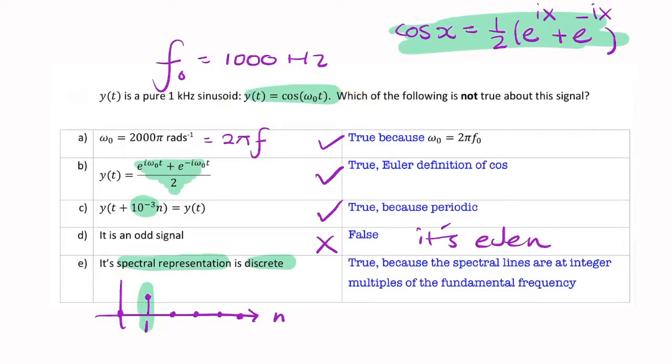So, as a rule, any periodic signal will have a discrete spectrum. And that's a periodic signal. So, it will have a discrete spectrum. That is a true statement.